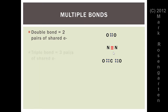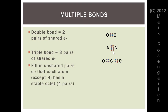Here's the triple bond again — replace it with three pairs of electrons, then fill in the unshared pairs so that each atom except hydrogen has a stable octet. This oxygen has two shared pairs, so does the other oxygen — each oxygen requires two unshared pairs to make a stable octet. Each nitrogen has three shared pairs, which means each needs a fourth unshared pair. In carbon dioxide, the carbon already has four pairs of shared electrons, and each oxygen has two pairs of shared electrons, requiring two more unshared pairs each.